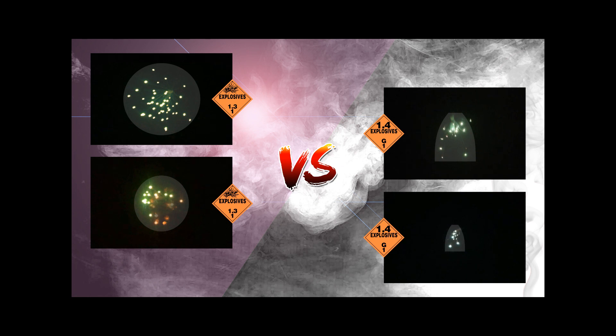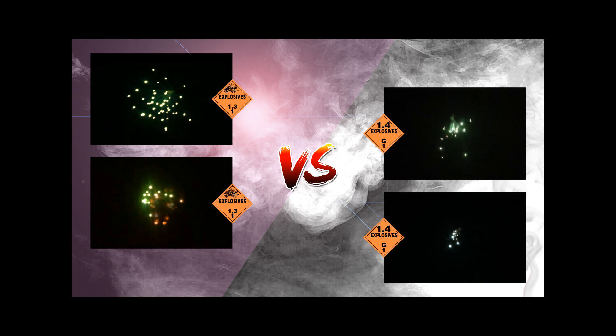The colours on the 1.3G rockets as shown on the left are also much more vivid. The greens were bright with a luminous glow whereas the 1.4G rockets had less vivid stars which were almost white in colour with only a hint of green.